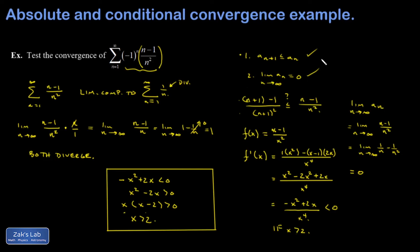To summarize what's happened here: we looked at the series of absolute values and found that it diverged, and then we looked at the actual alternating series and found that it converged. So this one is conditionally convergent.